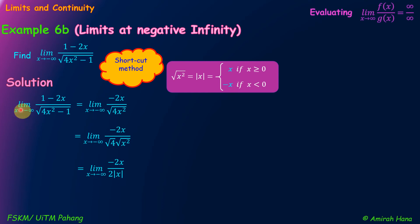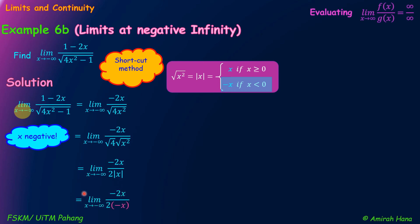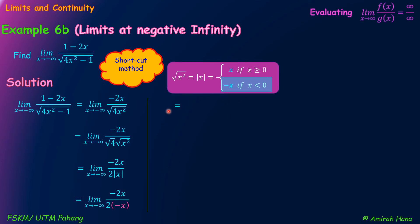From here, we have the limit as x approaches negative infinity, which means the value of x is now negative. So when x is less than 0 — in other words, when x is a negative value — we need to choose modulus x equals negative x. So we can write: limit as x approaches negative infinity of negative 2x over 2 times negative x, replacing modulus x with negative x because the value of x is negative.